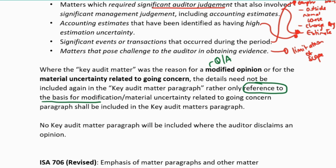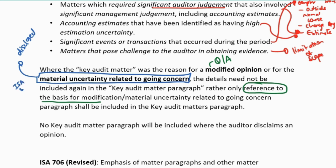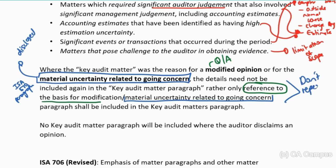Or if the key audit matter I would want to disclose was the fact that there was a material uncertainty with regards to going concern, and this was disclosed in the financials, then I would have had that paragraph per ISA 570 already included. So once again, I don't want to repeat - I will just include a reference to the material uncertainty related to the going concern paragraph under my key audit matter paragraph. What I'm showing you here is: don't repeat info that's in either the basis for an opinion or in another paragraph. In the key audit matter paragraph, just give a reference to that other paragraph or the basis.